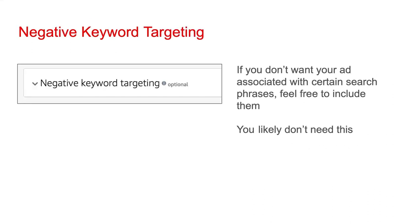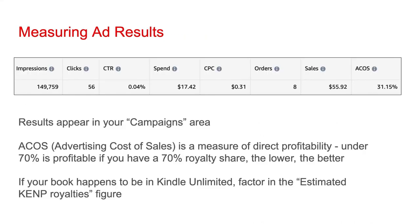You'll have the option for negative keyword targeting — but again, you likely don't need this. Regardless of the type of ad you run, you're going to be able to see results directly inside Amazon ads. In your campaigns area, you'll get: impressions (how many times your ad has been seen), clicks (how many times your ad has been clicked), CTR or click-through rate (how often your ad is clicked versus seen), spend (how much money you've spent on the ad so far), CPC (your average cost per click), and orders (how many times your ad directly led to somebody buying your book).